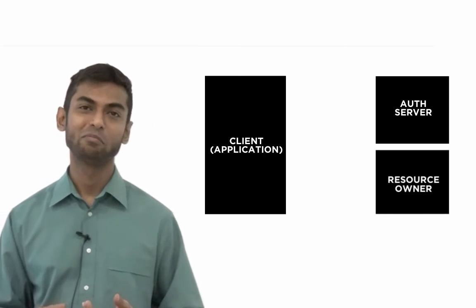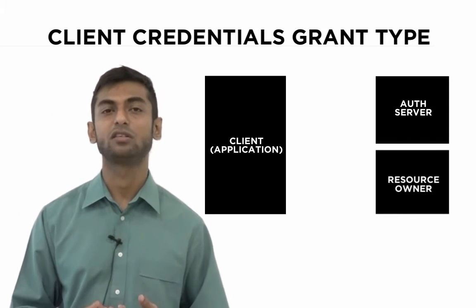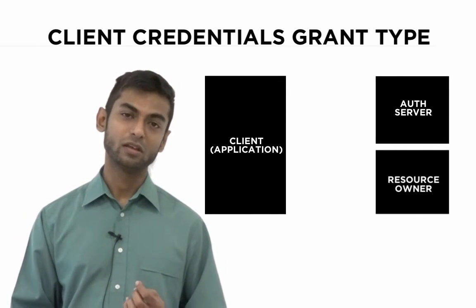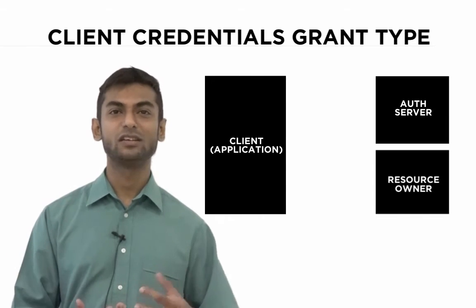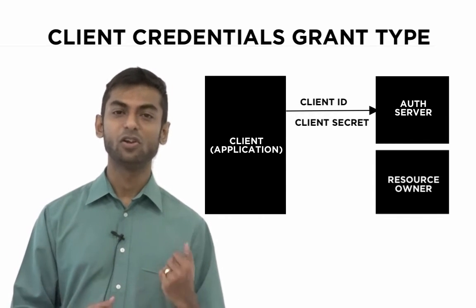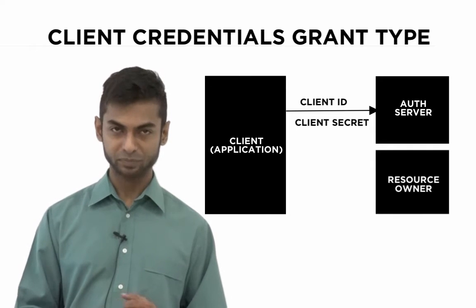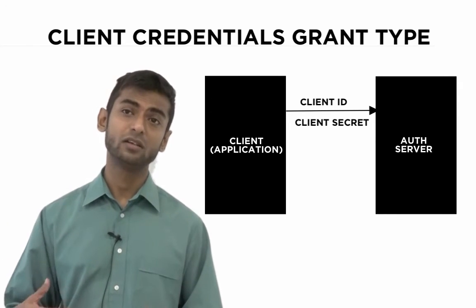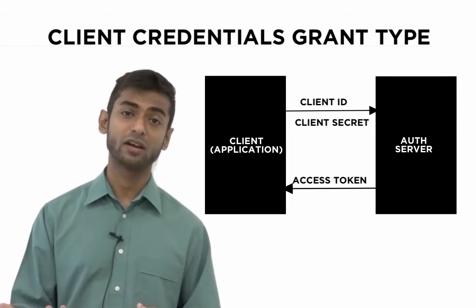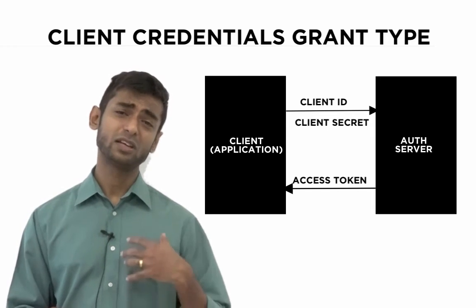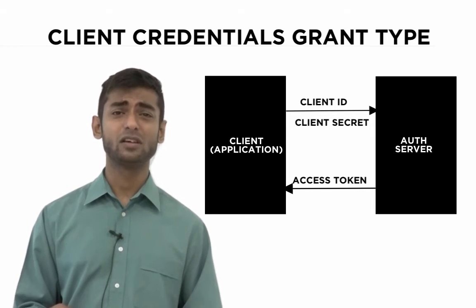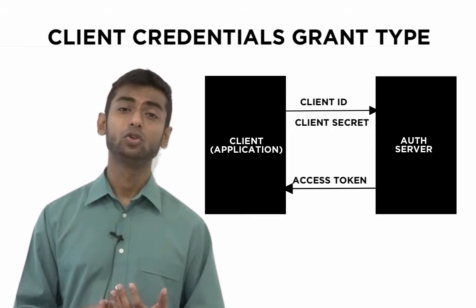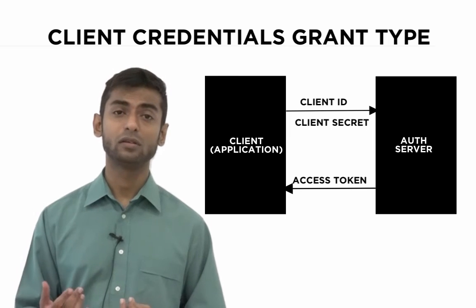The next grant type is the client credentials grant type. In this grant type, the application only needs to send its client ID and secret in order to get the access token. This particular grant type does not require the resource owner to intervene to authorize the request. It is used in machine-to-machine authentication where a human is not required to get involved to grant access.